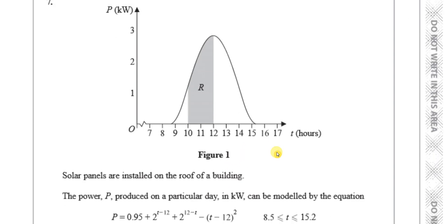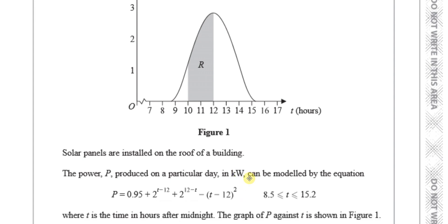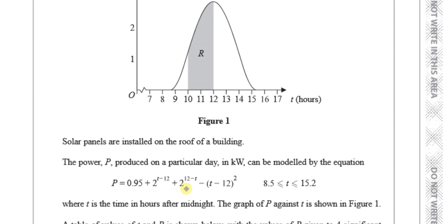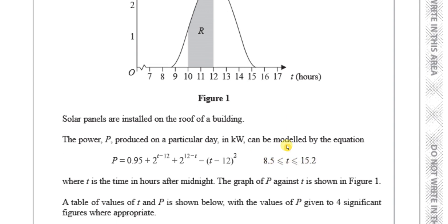This question tells us about solar panels installed on the roof of a building. The power P produced on a particular day in kilowatts can be modelled by the equation P equals 0.95 plus 2 to the power of t minus 12, plus 2 to the power of 12 minus t, minus t minus 12 squared.